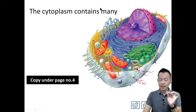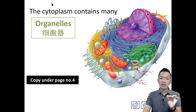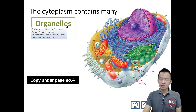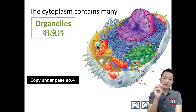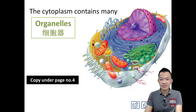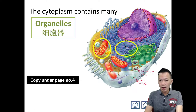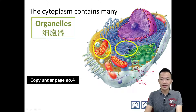在细胞浆里面，contains many organelles. 细胞浆里面有很多organelles. What is meant by organelles - 细胞器. These organelles, 这些细胞器在哪里呢? This is one of the organelles. All the small dot dot dot here - there are the organelles inside the cell.